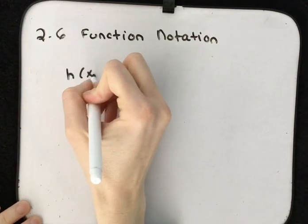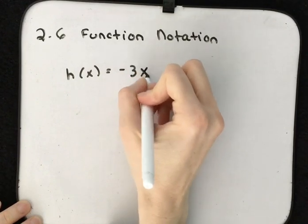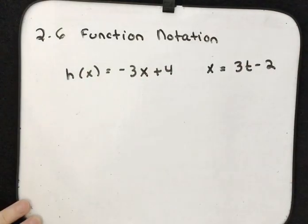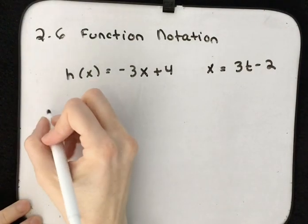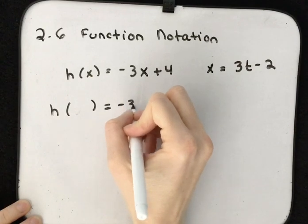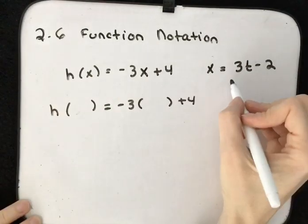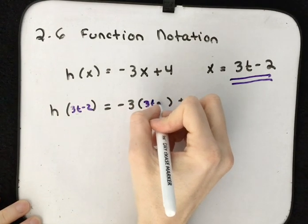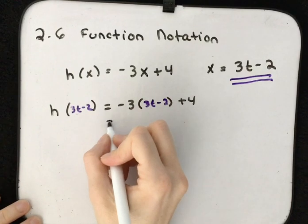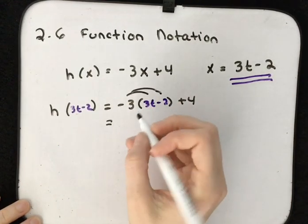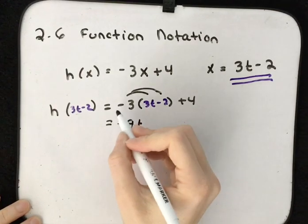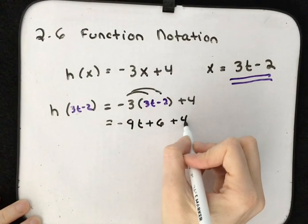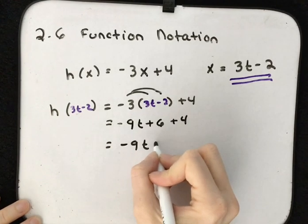Let's do h. So h of x equals negative 3x plus 4, and this time let's say x equals 3t minus 2. We rewrite our function and where we see x we leave a parenthesis, filling in 3t minus 2. Then we distribute: negative 3 times 3t is negative 9t, negative 3 times negative 2 is positive 6, and we bring down our plus 4, giving us negative 9t plus 10.